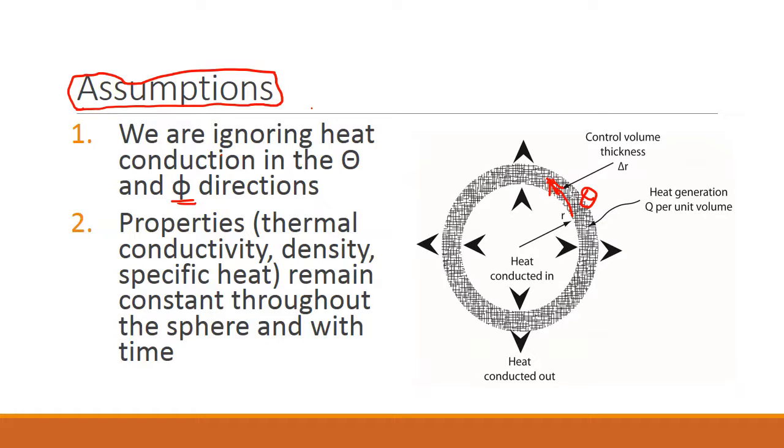So we are ignoring conduction in the theta direction. What does that mean? It means temperature does not change along this direction. If temperature does not change, then by Fourier's law there cannot be heat flux because heat flux is proportional to temperature gradient.